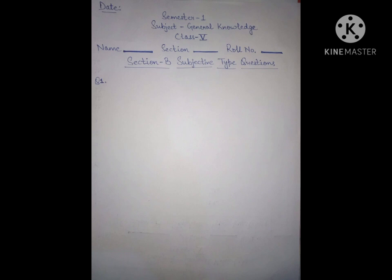first of all, write date on the top. Then, the heading semester 1, subject, class, your name, section, roll number and the heading section B subjective type questions. After that,